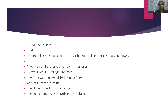The next type of preposition is prepositions of place. The word 'at' is used to show the exact point — for example, houses, stations, small villages or towns. For example: they lived at Gohana, a small town in Haryana. He was born at his village, Shailmar. The prime minister lives at 10 Downing Street.